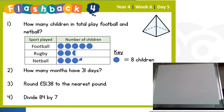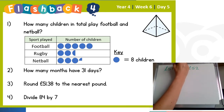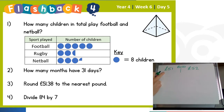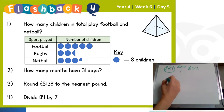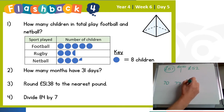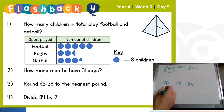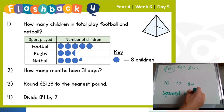For question three, £51.38 to the nearest pound lies between £51 and £52. Halfway would be £51.50, so since £51.38 is less than £51.50, it's nearer to £51. Divide 84 by 7 — that's 12, because 12 sevens are 84. And the shape in the top right-hand corner is a square-based pyramid.